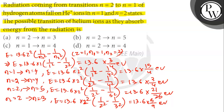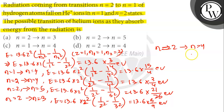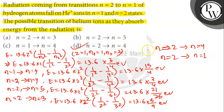Therefore, the energy needed for the transition of the helium ion from N=2 to N=4 matches exactly with the energy released by the hydrogen atom. So option D is the correct answer: N=2 to N=4. Thank you.